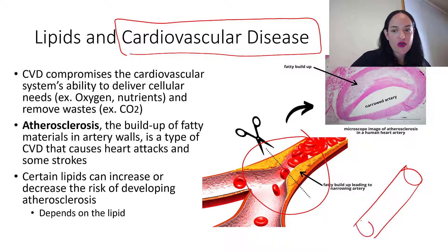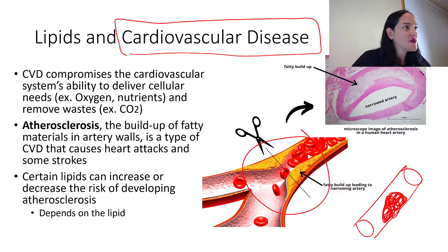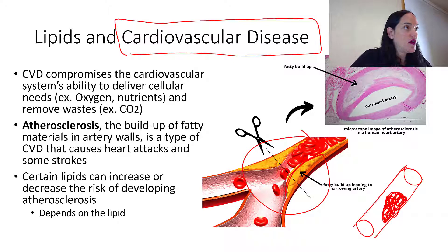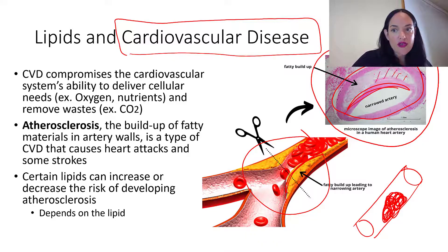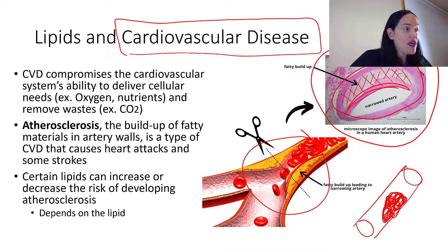Atherosclerosis is when an artery in our body gets blocked or clogged with fatty substances. This is what we're showing here — these are the fatty substances clogging an artery. This is actually a real picture of atherosclerosis. The artery should be nice and open, but you can see it's been quite narrowed, with all this area here being fatty substances lodged in the artery wall.